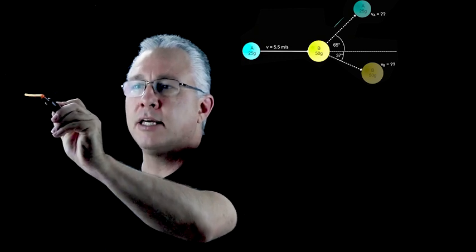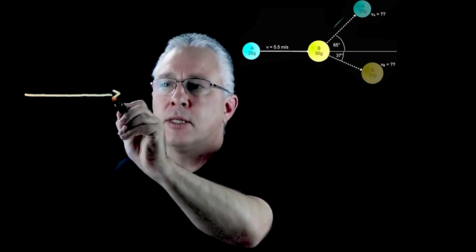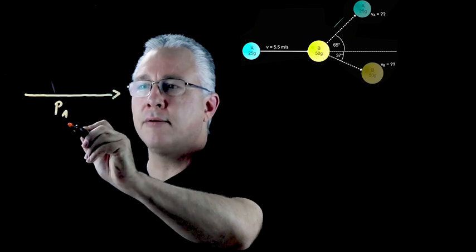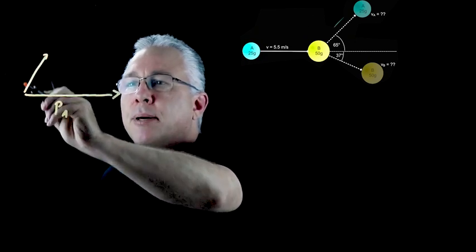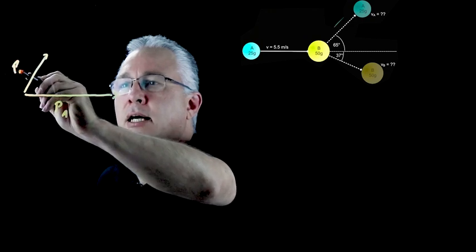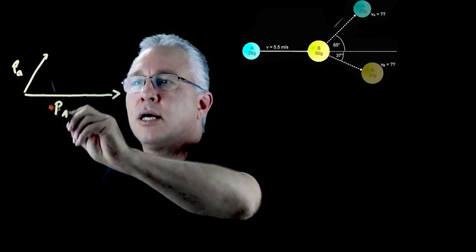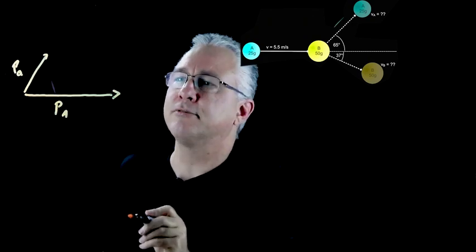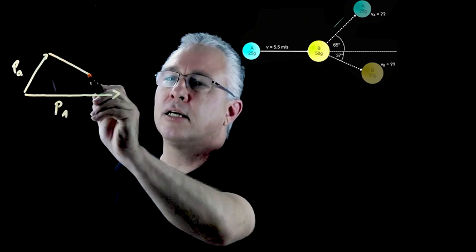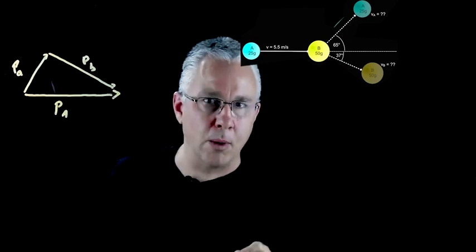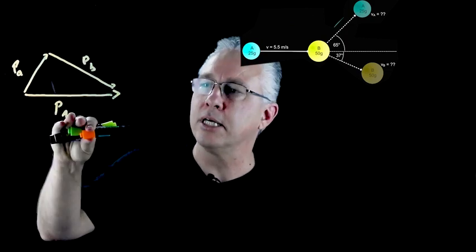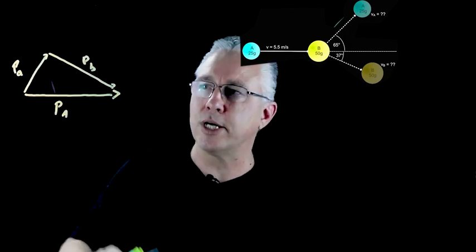So what we have here is my vector for A, which is my P of A equals the vector of this one, which is my P of A afterwards. Notice I just use a little letter to make it different. And my vector of momentum B afterwards. Again a lowercase to show that these are my after situations and this is my initial situation.